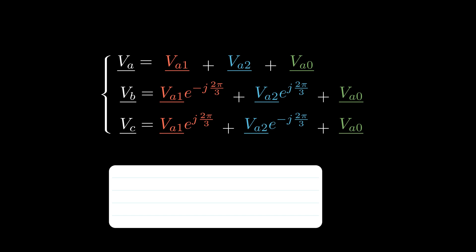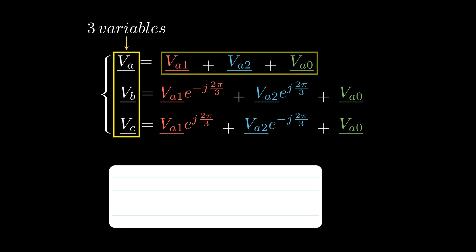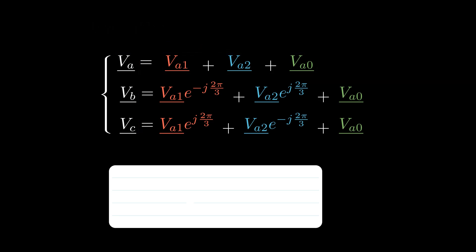So, for each sequence we only need one variable, giving us a total of three variables. This makes sense since we shouldn't need more than three independent variables to fully describe the original three imbalanced phase voltages.